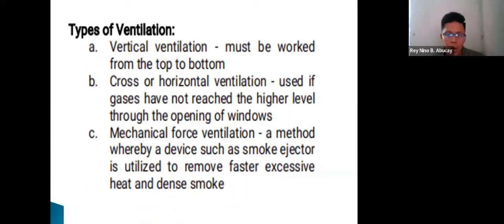Two types of ventilation: vertical ventilation, which must work from top to bottom; and cross or horizontal ventilation, used when gases have not reached the higher level to open windows. There's also mechanical forced ventilation, where a device such as a smoke ejector is utilized to remove smoke.